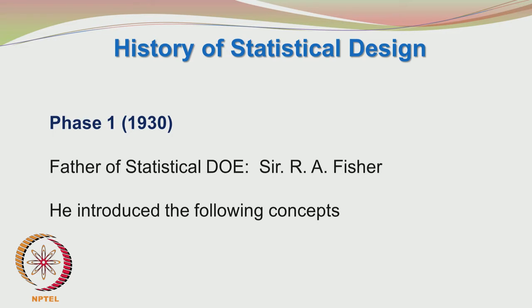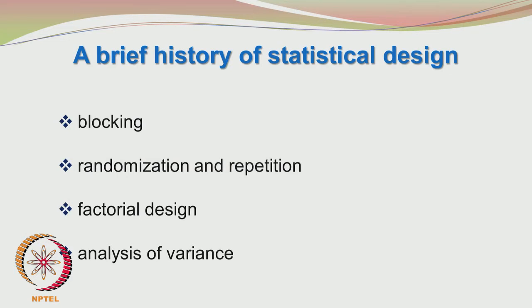We will be looking at the history of statistical design. There was a phase in 1930 where Sir Fisher introduced some very interesting concepts. He was working in a research institute involving agriculture and came up with some novel ideas. He brought in the concepts of blocking, randomization and repetition, factorial design and analysis of variance. These remain the backbone of statistical design of experiments, and we are really indebted to Fisher for bringing these concepts.